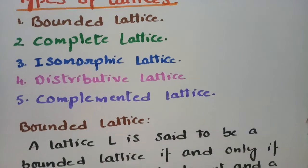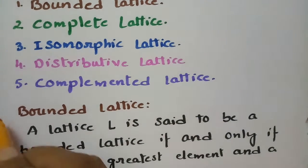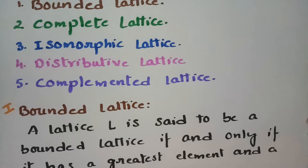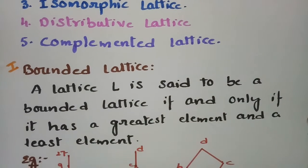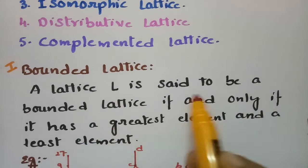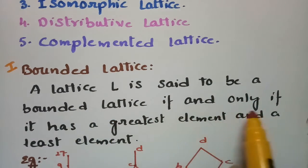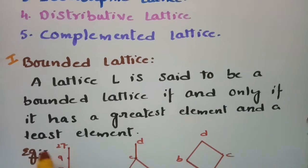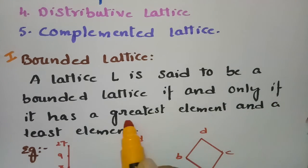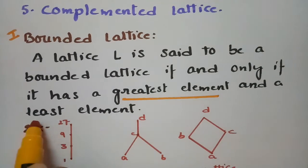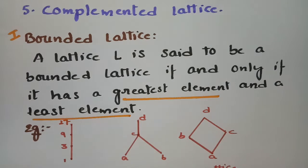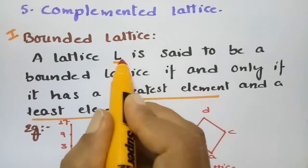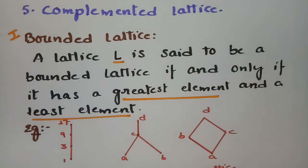The first type is the bounded lattice. A lattice is said to be a bounded lattice if and only if it has a greatest element and a least element.